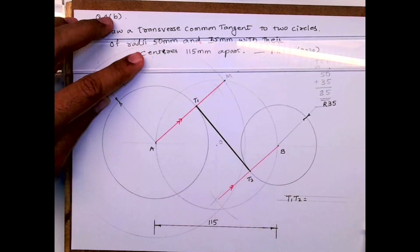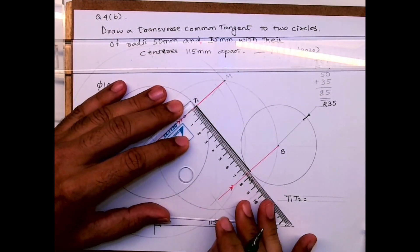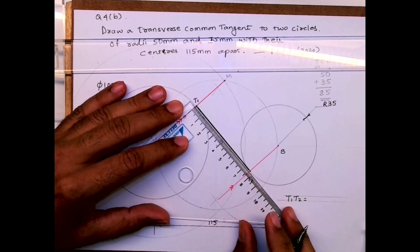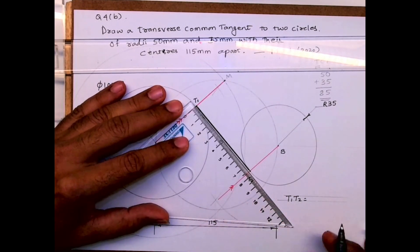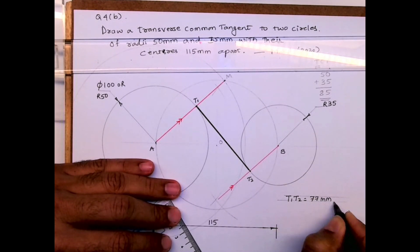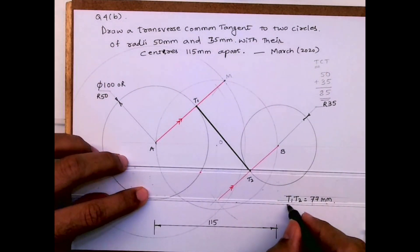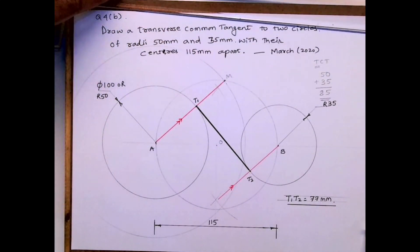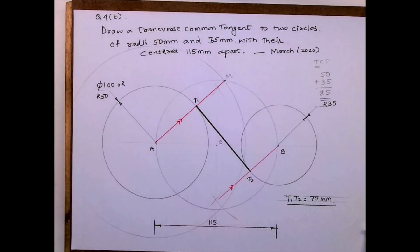You write T1, T2 equals 2. I'm getting somewhere around in between 76 and 77. I'm writing 77mm. So I hope you people have understood this sum. Thank you.